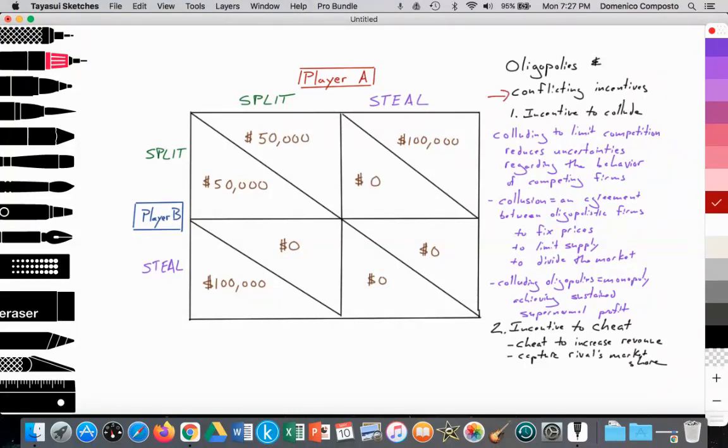The conflicting incentive is, one, they have the incentive to work together. And if they work together, they walk away with half of the money, in this case, $50,000, $50,000. Clearly, both sides walk away better off.